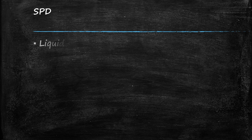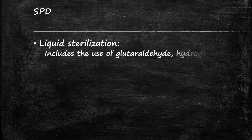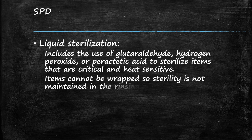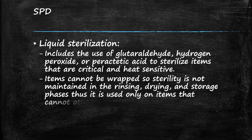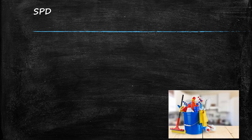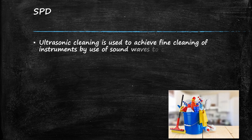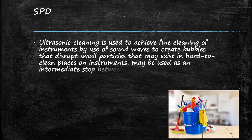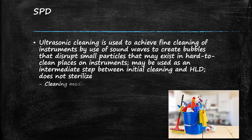Liquid sterilization includes the use of glutaraldehyde, hydrogen peroxide, or peracetic acid to sterilize items that are critical and heat sensitive. Items cannot be wrapped, so sterility is not maintained in the rinsing, drying, and storage phases; thus it is used only on items that cannot otherwise be sterilized. Ultrasonic cleaning is used to achieve fine cleaning of instruments by the use of sound waves to create bubbles that disrupt small particles in hard-to-clean places on instruments. It may be used as an intermediate step between initial cleaning and high-level disinfection. It does not sterilize.